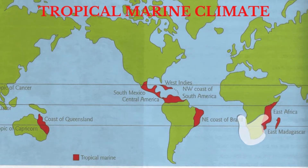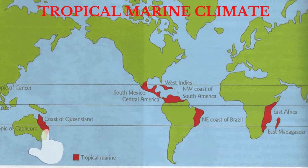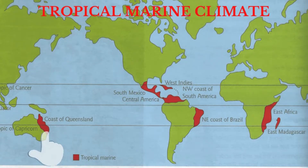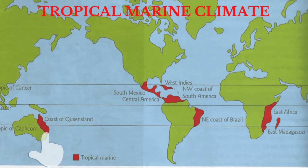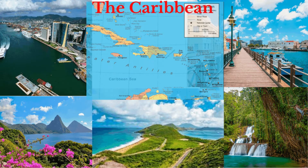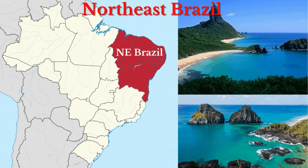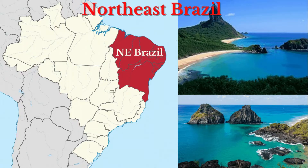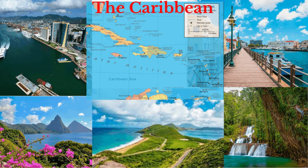Let's now turn to the tropical marine climate. Tropical marine climate is located on islands and coastal areas between 10 degrees to the tropics. This climate comes under the influence of the trade winds blowing onshore. The climate is therefore experienced by most of the Caribbean islands, but also occurs in northeast Brazil as well as the east coast of Madagascar.